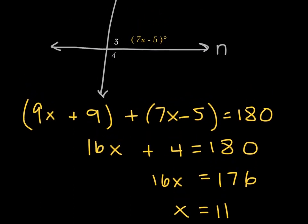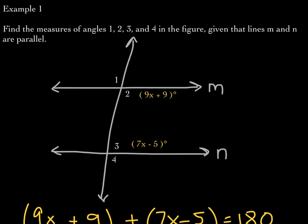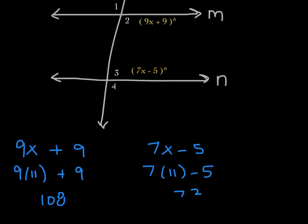Now x = 11, so I'll plug that back into the expressions. Angles one and two are vertical angles, so they're equal. Angles one and four are alternate exterior angles, so they're equal as well. Plugging in 11 gives angle 2 as 108 degrees — which is also the measure of angles one and four. The expression 7x − 5 gives 72 degrees when x = 11, so angle three is 72 degrees.